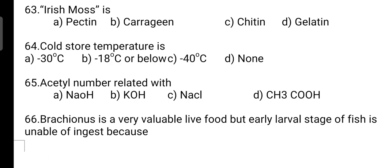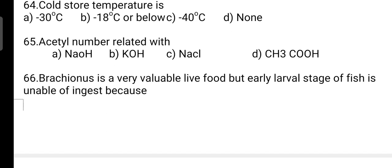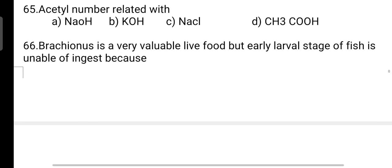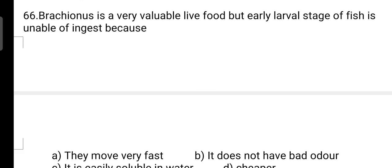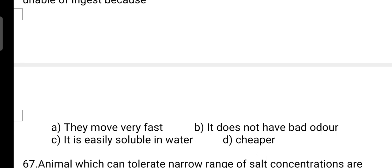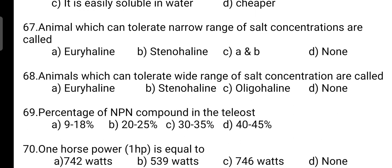Cold store temperature is: correct answer is Option B — minus 18 degrees Celsius or below. Next, acetyl number is related with: correct answer is Option B — it is related with KOH. Next, Brachionus is very valuable live food but early larval stage of fish is unable to ingest it because they move very fast — correct answer is Option A. Animals which can tolerate a narrow range of salt concentration are called: correct answer is Option B — stenohaline.